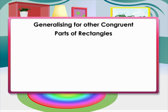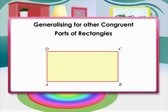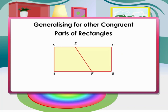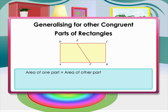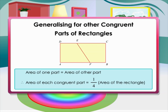Generalizing for other congruent parts of rectangles: consider a rectangle in which a line EF is drawn. The line EF divides the rectangle into two equal parts. Both parts are congruent, so the area of one part equals the area of the other. Therefore, the area of each congruent part equals half the area of the rectangle.